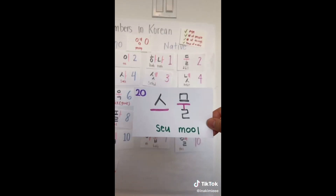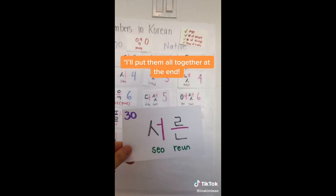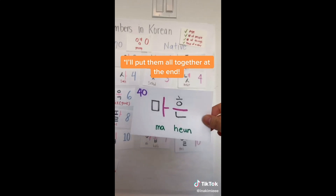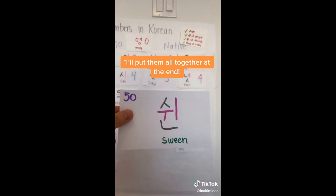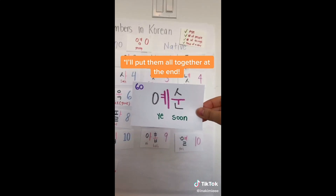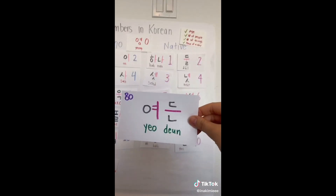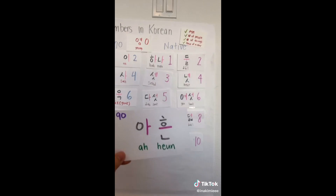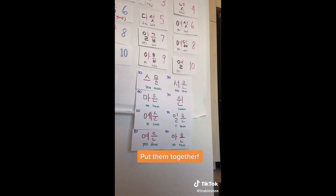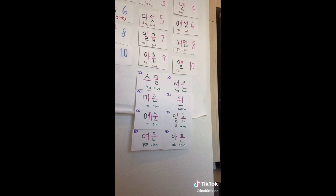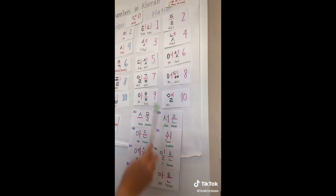20 is 스물, 30 is 서른, 40 is 마흔, 50 is 쉰, 60 is 예순, 70 is 일흔, 80 is 여든, 90 is 아흔. Now you can put the numbers together. For example, 29 would be 스물아홉, 48 would be 마흔여덟, 15 would be 열다섯, and 61 would be 예순하나. You got this!